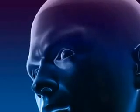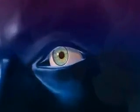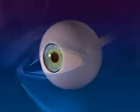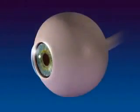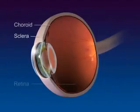The location of the eyes enables us to see length, width, depth, and distance of an object. The eye has three layers: the sclera, choroid, and retina.